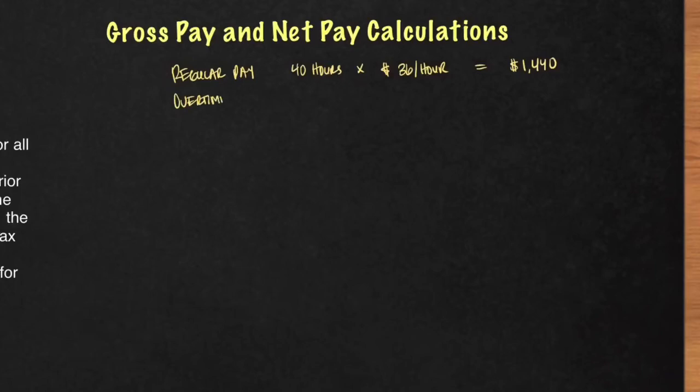Now, we're going to calculate the overtime pay. The overtime pay, Xavier worked an additional 14 hours over the 40 hours. You're going to multiply that again by his hourly rate, which is $36, times the 1.5. You should get $756.